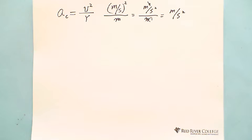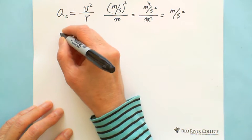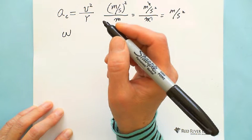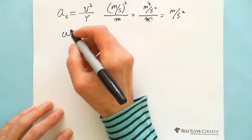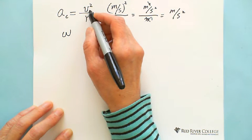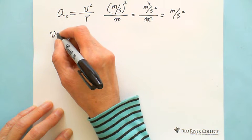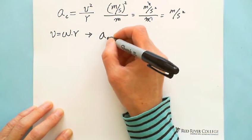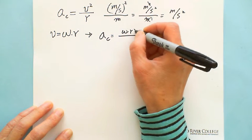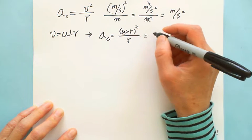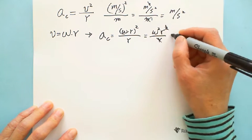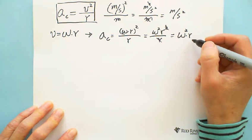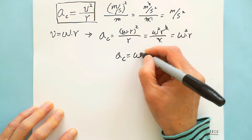If you are given angular velocity omega instead of tangential velocity, we use the relation that tangential velocity equals omega times R. Substituting into the formula, we get acceleration equals omega times R squared over R, which gives us omega squared times R. This is the second formula.